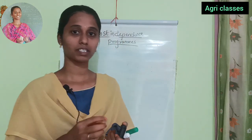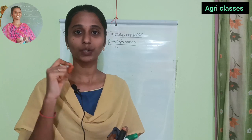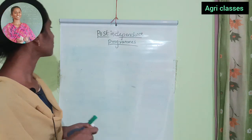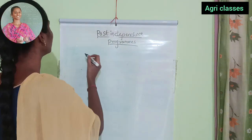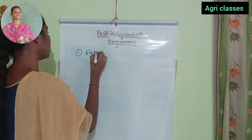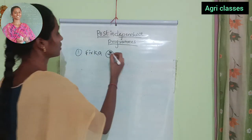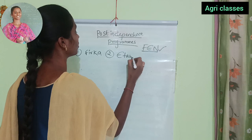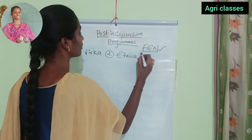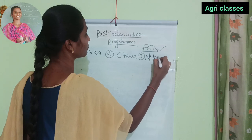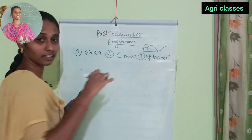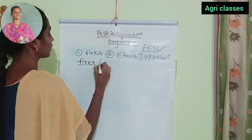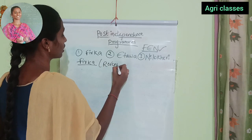That pre-independence — what important years, what concern persons. Pre-independence development projects: the first one is FIRKA, the second one is ETAWA, and the third one is Nilo Keri. These three projects are pre-independence projects. First, we will describe FIRKA. FIRKA is a revenue block.